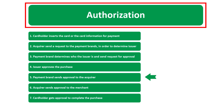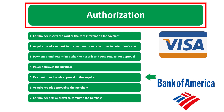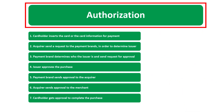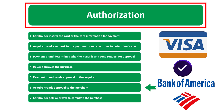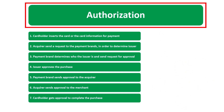In case it is approved, we move to step number five: the payment brand sends approval to the acquirer. Visa sends approval to the acquirer — the bank of the merchant. Step number six: the acquirer — the bank of the merchant — sends approval to the merchant, confirming the transaction is approved and goods or services can be delivered to the client.